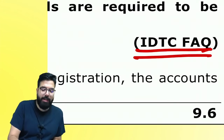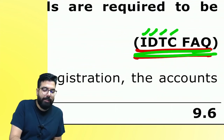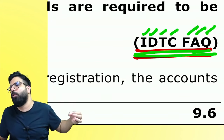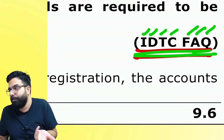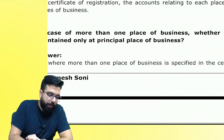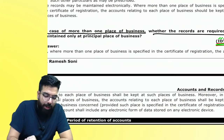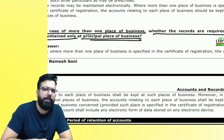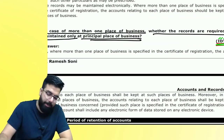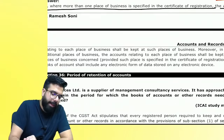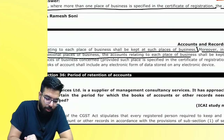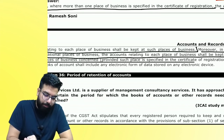IDTC FAQs — what is IDTC? Indirect Tax Committee of the CA Institute. People ask them frequently asked questions, and I have taken some of those questions to teach this chapter. FAQ: In case of more than one place of business, where are records required to be maintained? Only at the principal place? No — additional place of business accounts are to be maintained at the additional place.